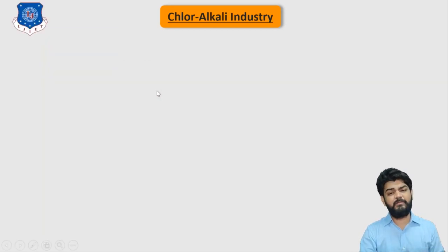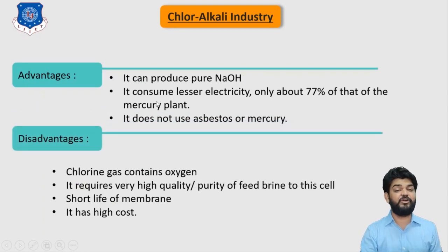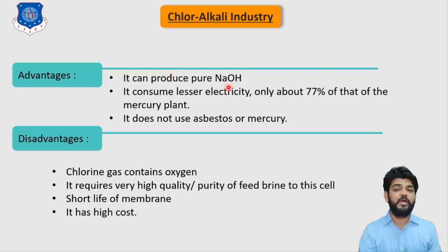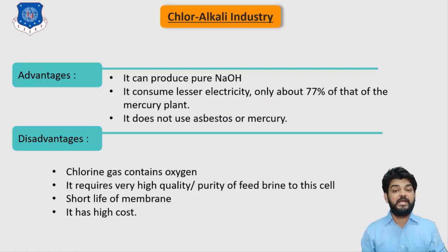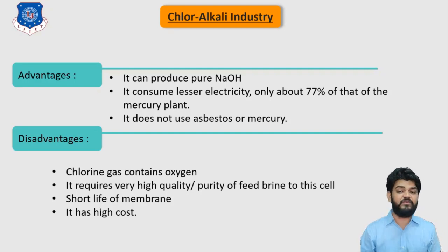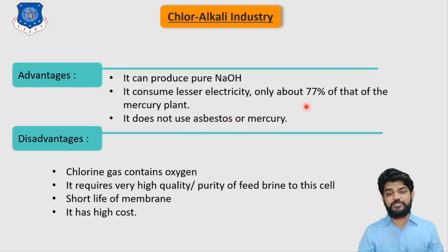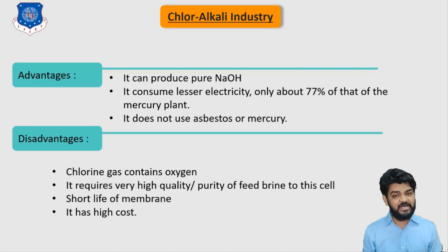The advantages of the membrane cell include production of a relatively pure form of NaOH. It consumes lesser electricity — only 77% of the electricity compared to the mercury cell — enabling significant cost reduction. It does not use any hazardous substances such as asbestos or mercury, so waste disposal is not a major problem.